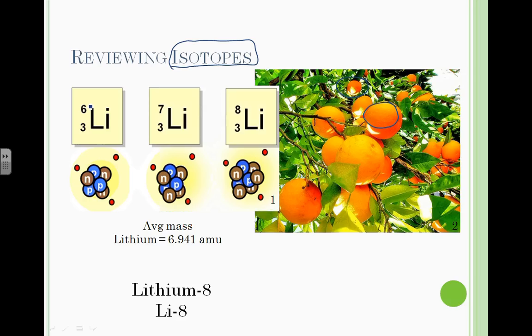For example here, this lithium has a mass of 6. This lithium has a mass of 7. This lithium has a mass of 8. They all have three protons. That is why they are lithium. But they have a different number of neutrons, so they have different masses.